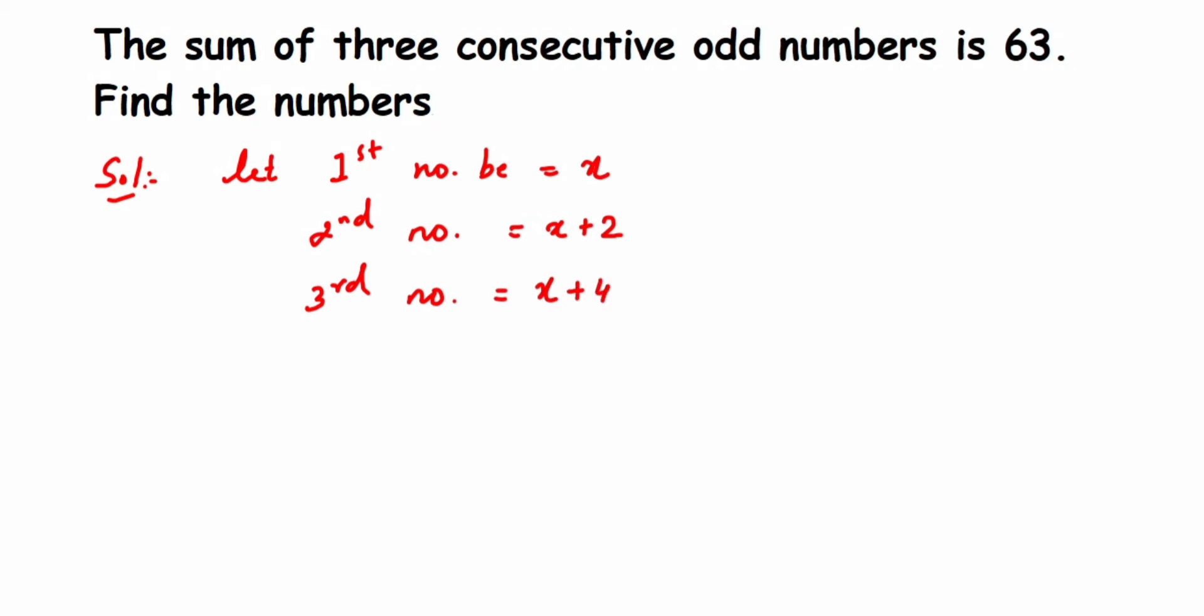Now according to the question, we have to add all of these three to get 63, right? So x plus x plus 2 plus x plus 4 will give us 63. Now x, x, and x will become 3x, and 2 plus 4 is 6, equals 63.